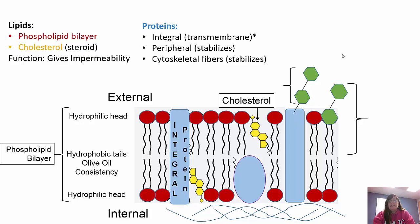Cholesterol helps the membrane maintain its fluidity. If it gets really cold, the membrane tends to get really solid, so cholesterol molecules can push the phospholipids apart and keep it semi-fluid. If it gets too hot, the membrane tends to get really fluid, so cholesterol can hang on to the phospholipids and keep them closer together. Remember, cholesterol is a steroid with four carbon-fused rings.